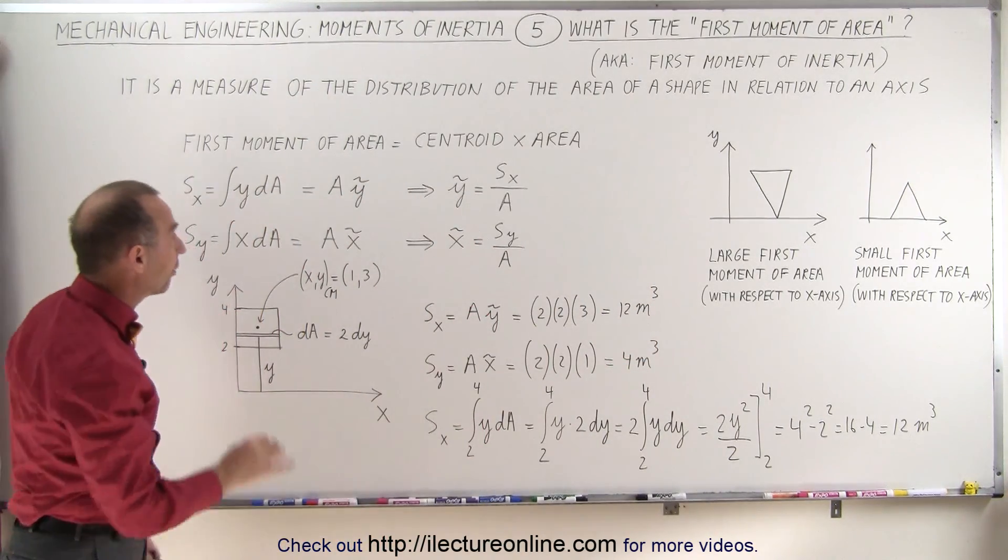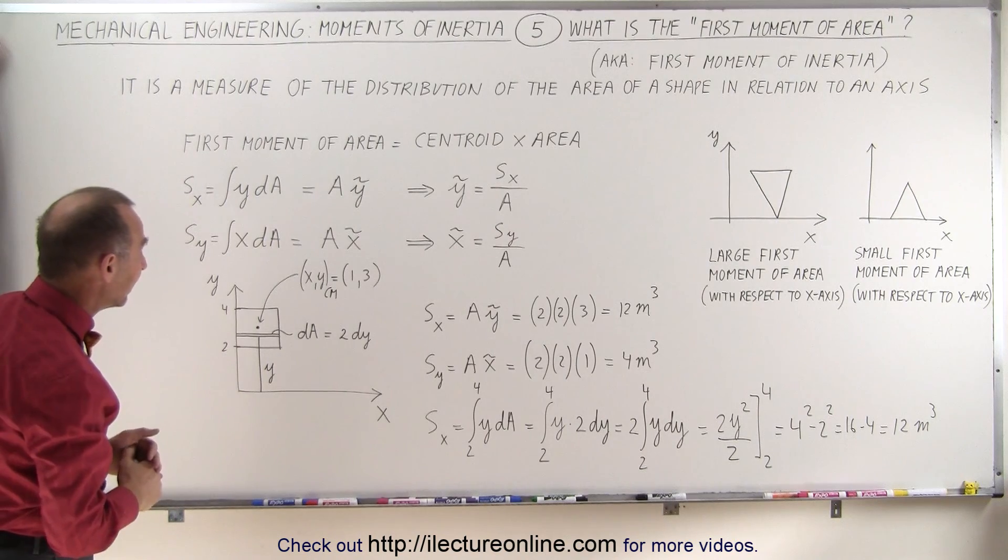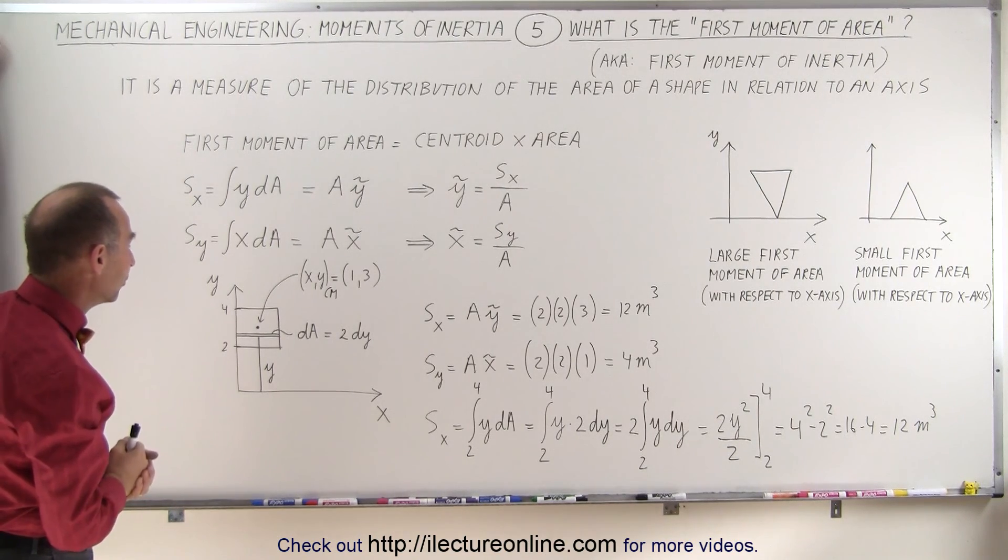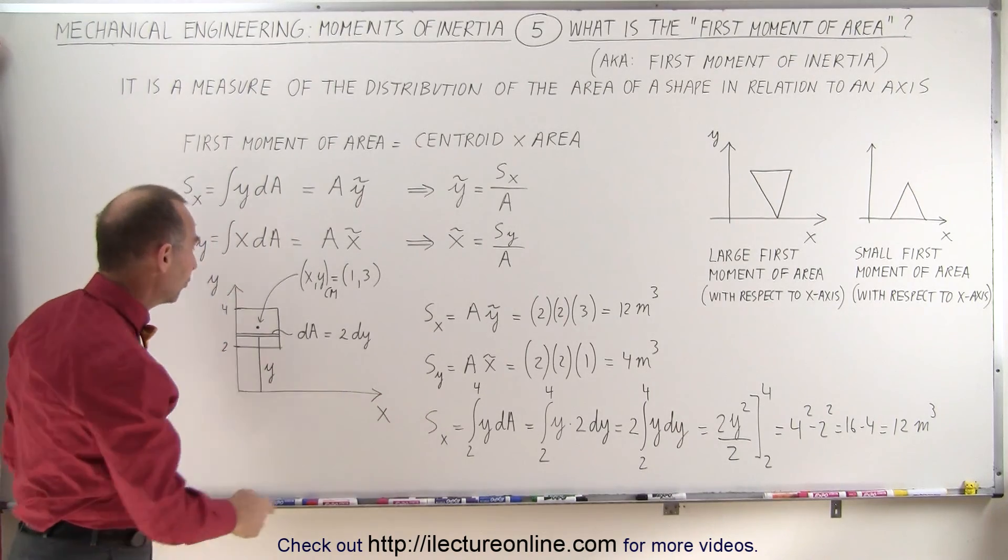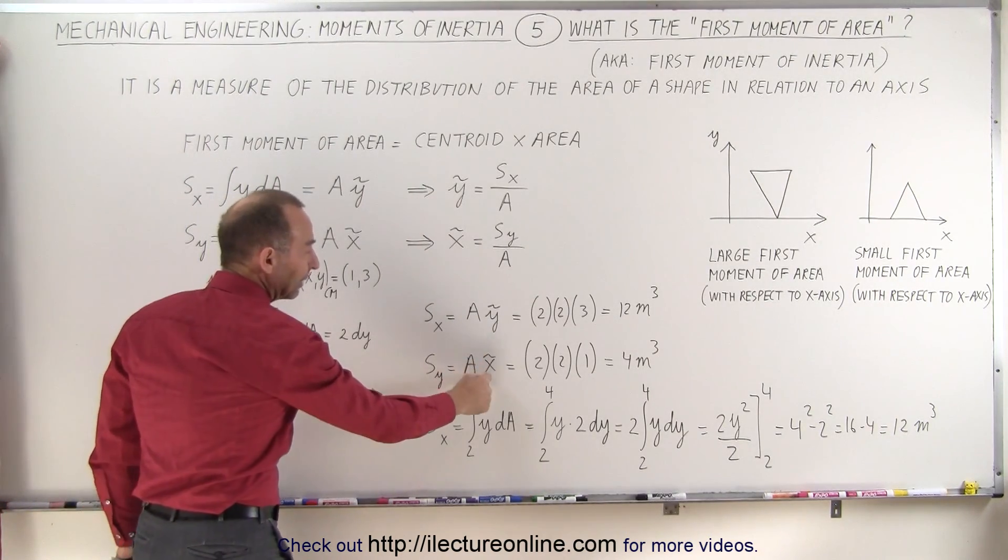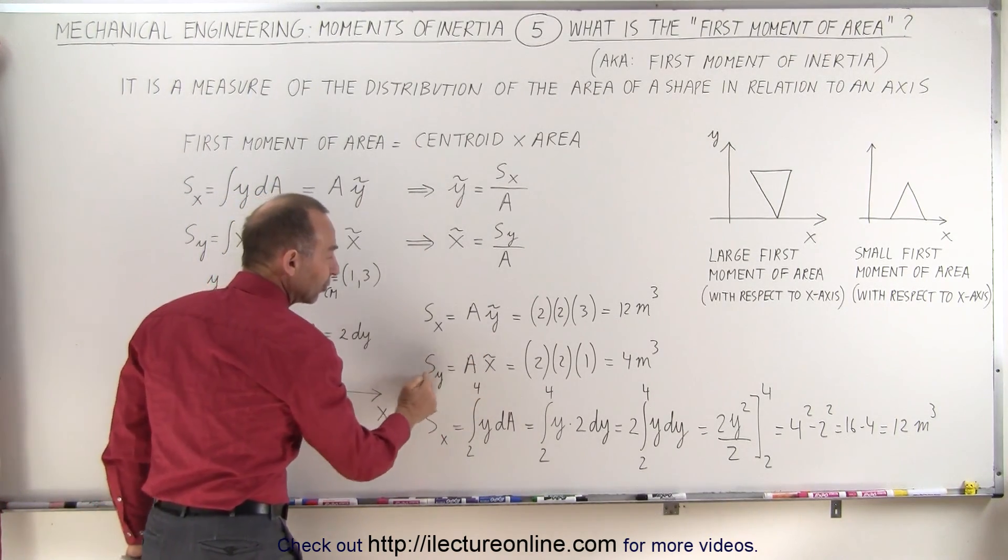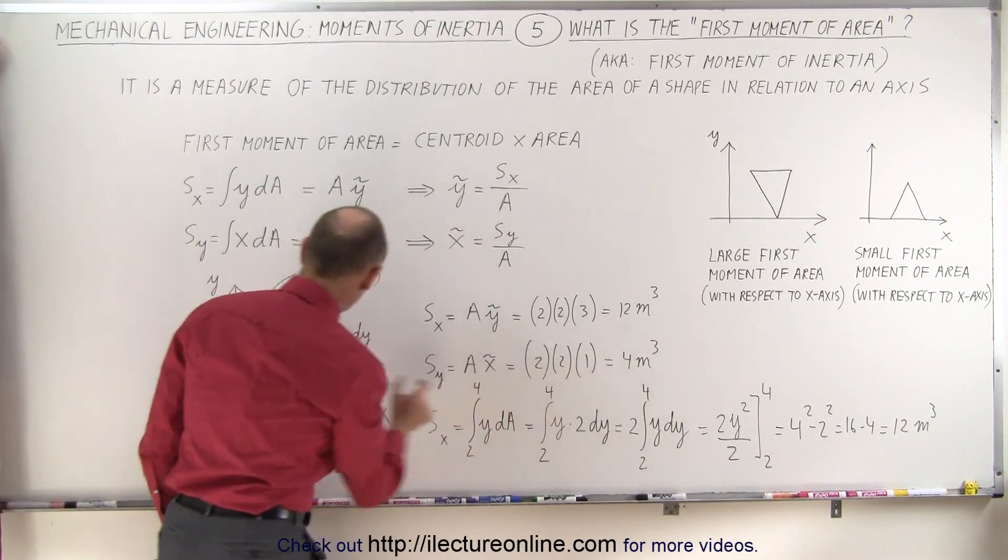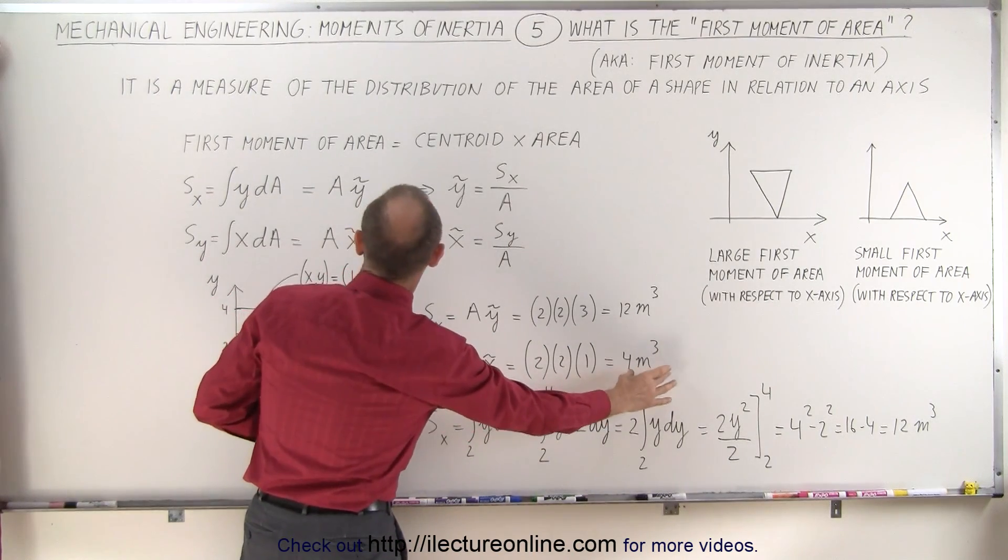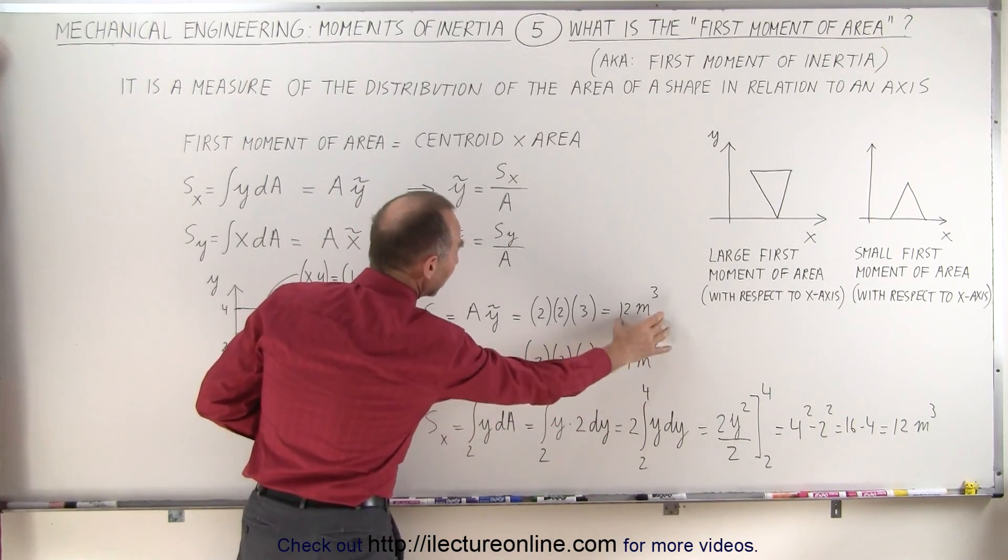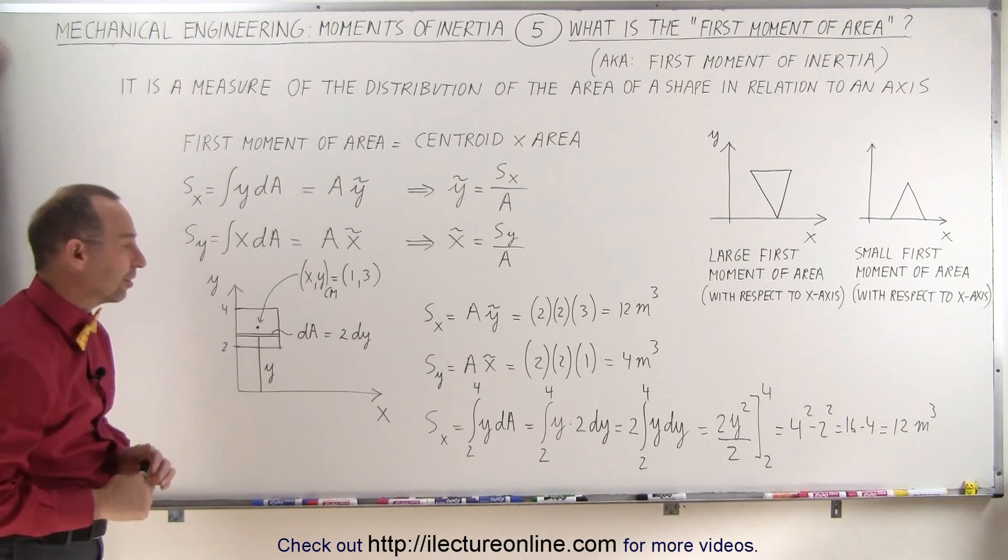Remember that the units of the first moment of area is meters cubed. If we do it with respect to the y-axis, notice again we multiply the area times the distance from the y-axis to the centroid, which in this case is only one unit. So you can see that relative to the y-axis you get a much smaller first moment of area than you do for the x-axis.